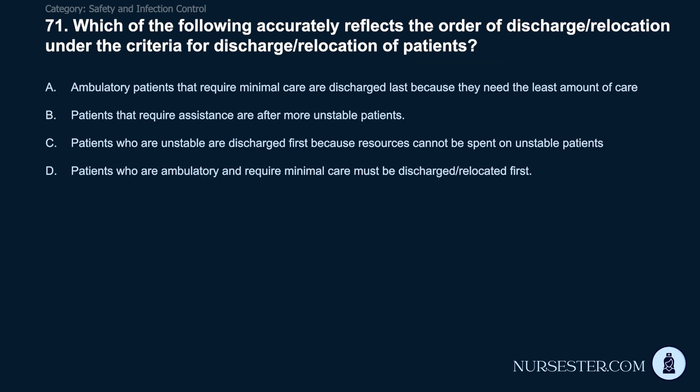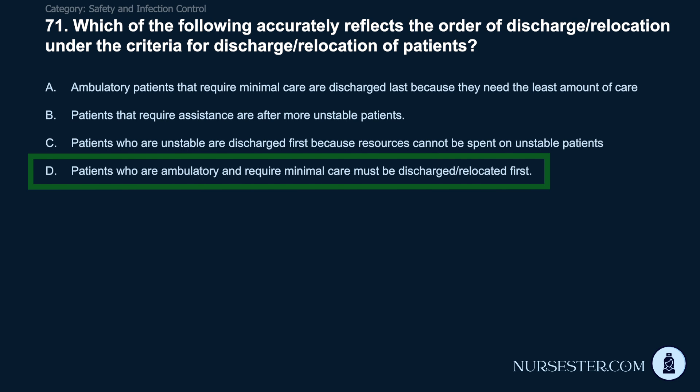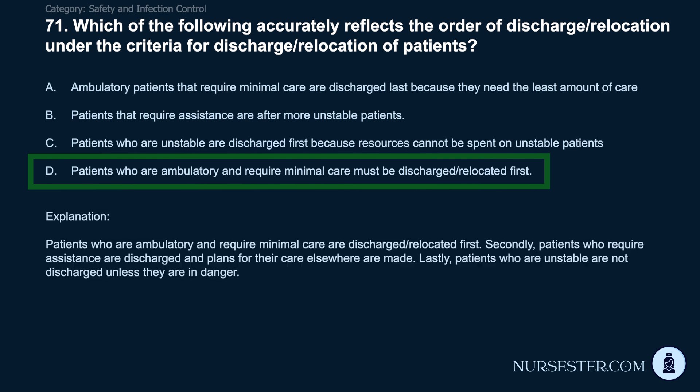Question 71: Which accurately reflects the order of discharge/relocation of patients? A) Ambulatory patients requiring minimal care are discharged last. B) Patients requiring assistance are after more unstable patients. C) Unstable patients are discharged first. D) Patients who are ambulatory and require minimal care must be discharged/relocated first. Correct answer: D. Ambulatory patients requiring minimal care are discharged/relocated first. Secondly, patients requiring assistance are discharged and plans for their care elsewhere are made. Lastly, unstable patients are not discharged unless they are in danger.